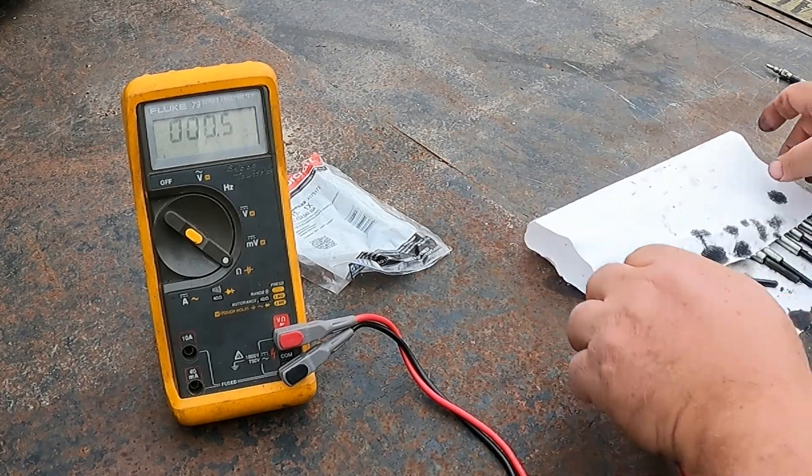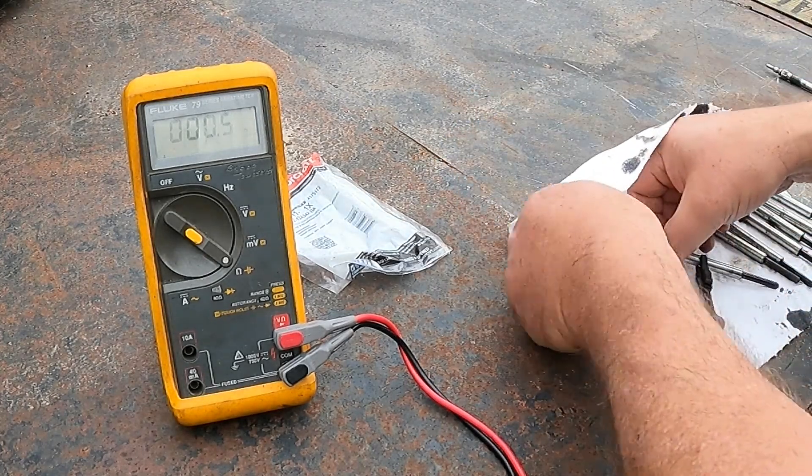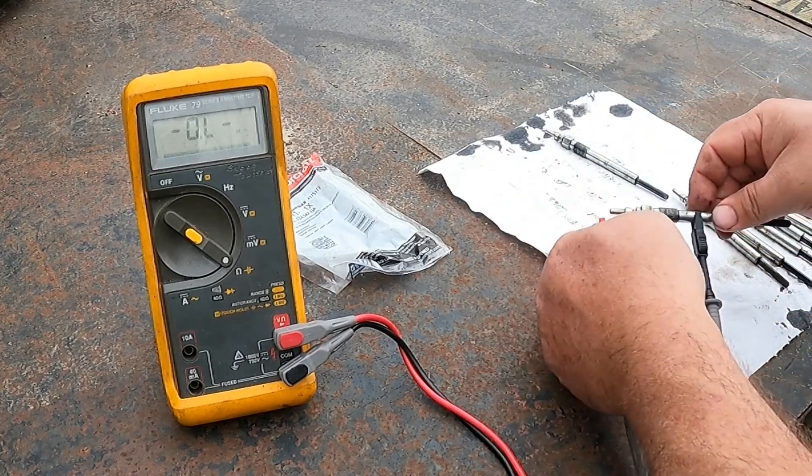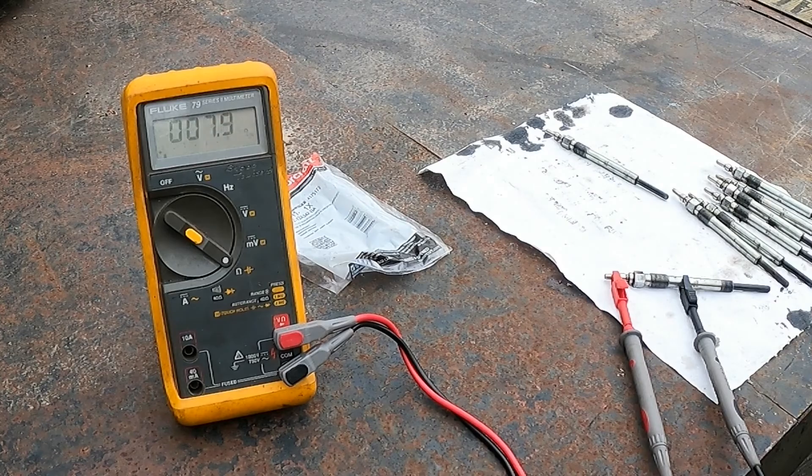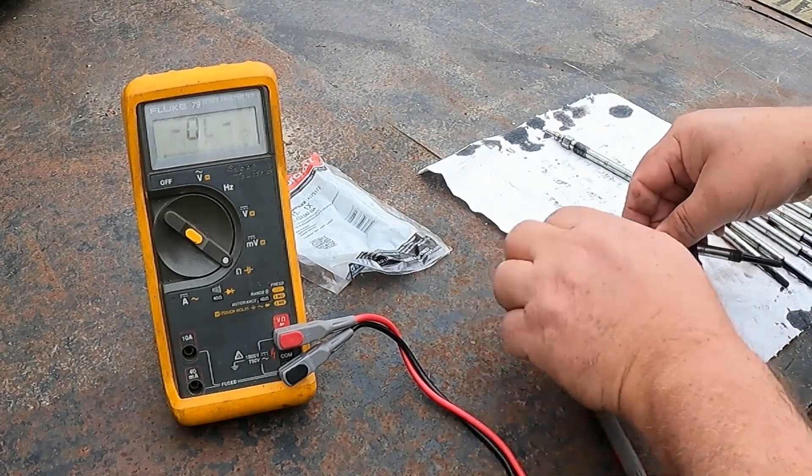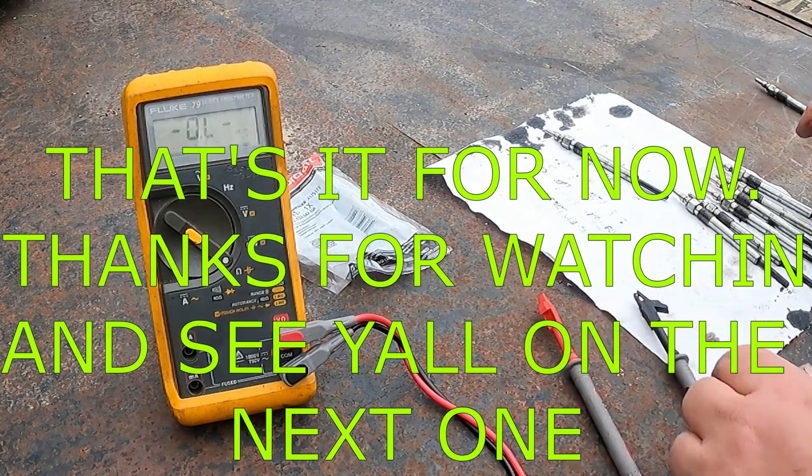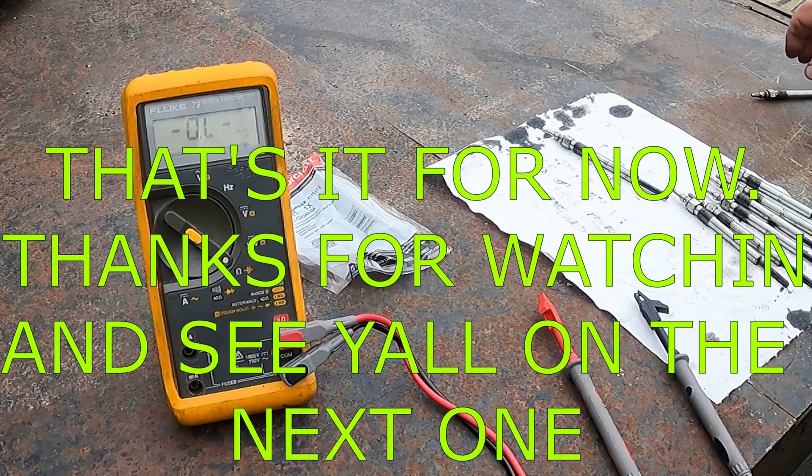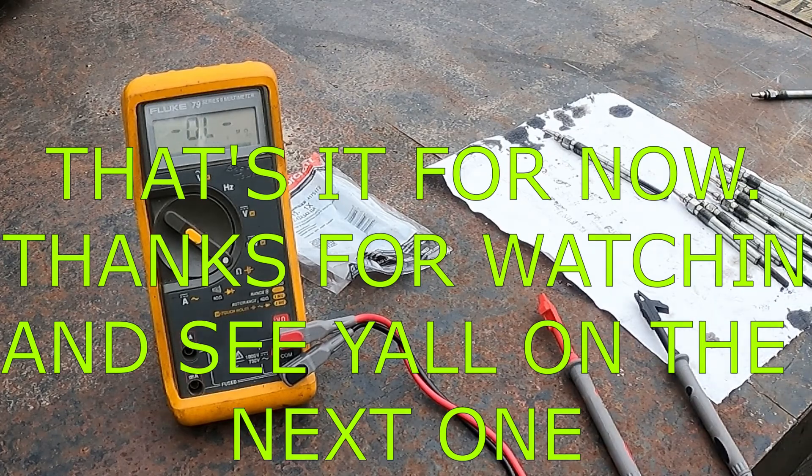Okay, so all of these are 0.5 to 0.6. And again, the one that we're testing that's bad is 7.9. So we're going to can this one and get another good one to replace it, and we're going to run them back in the truck.